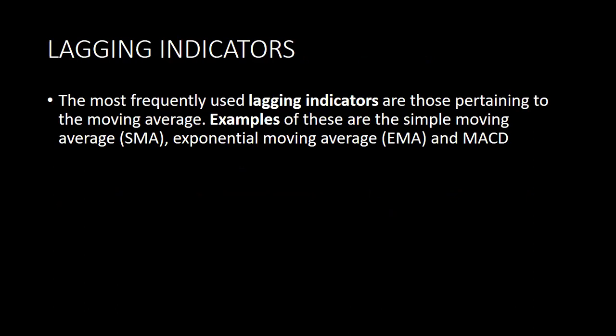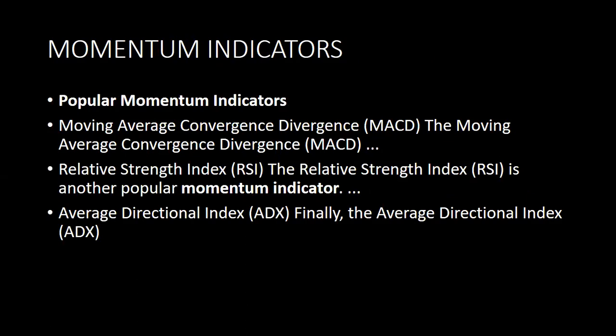The lagging indicators include moving averages — simple moving averages and exponential moving averages. For momentum indicators, you have the Relative Strength Index and the Average Directional Index. The MACD, which is Moving Average Convergence Divergence, is one of the best indicators designed because it serves both as a momentum indicator and as a trend indicator.